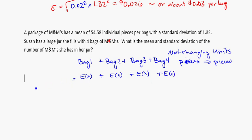The mean number of pieces in each of those bags should be the same. So that's basically saying that if we want to know the expected number in the jar, that's going to be the 4 bags all added up, so that just becomes 4 times the 54.58 which is equal to 218.32, which if we round would be approximately 218 pieces in the jar.